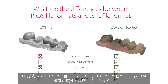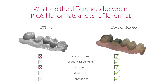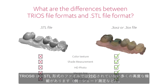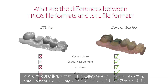STL files describe only the surface geometry of a three-dimensional object, without any representation of color, texture or other common CAD model attributes. Trios offers a number of advanced features that are not supported by the STL file format, for example color and shape measurement. If you want to support these advanced features, you should upgrade your Trios Inbox to a dental system Trios only.